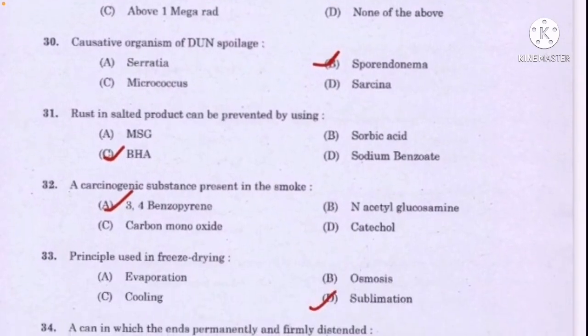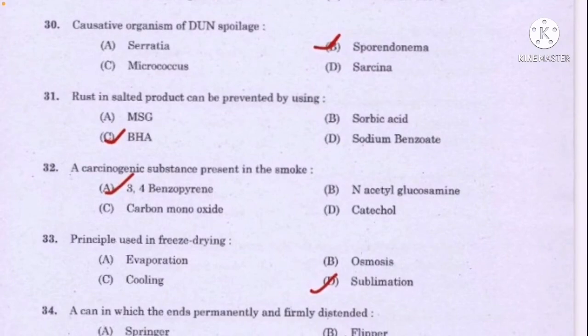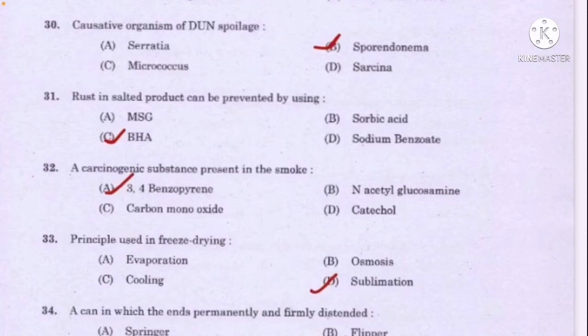Causative organism of fish spoilage — correct answer option B: Sporendonema. Rust in salted products can be prevented by using — correct answer option C: BHA. A carcinogenic substance present in smoke — correct answer option A: 3,4-benzopyrene. Principle used in freeze drying — correct answer option D: sublimation.